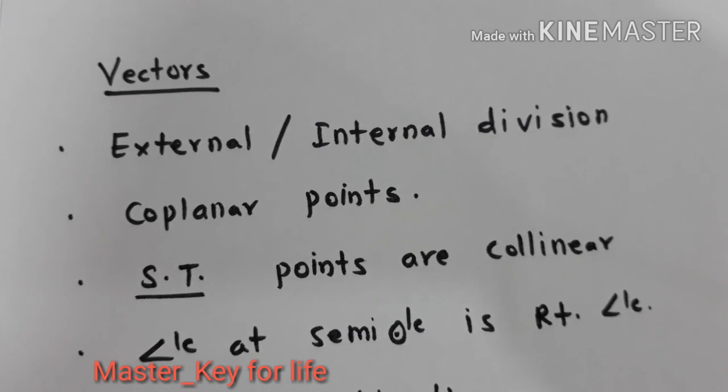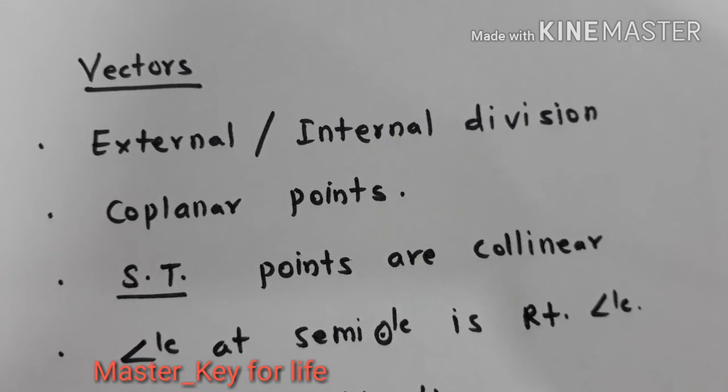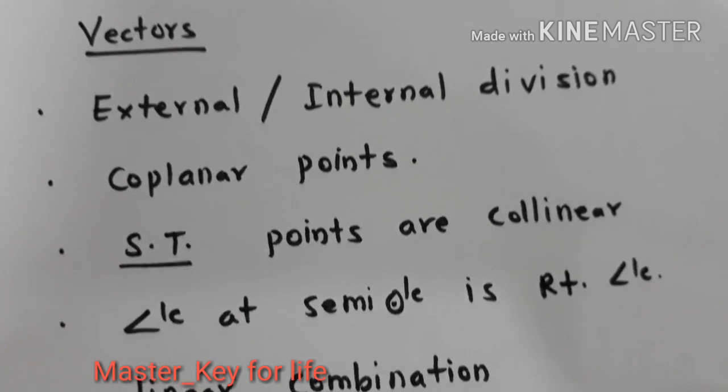Again, a theory question. Angle subtended at semicircle is right angle. Proving this statement is a very important question.